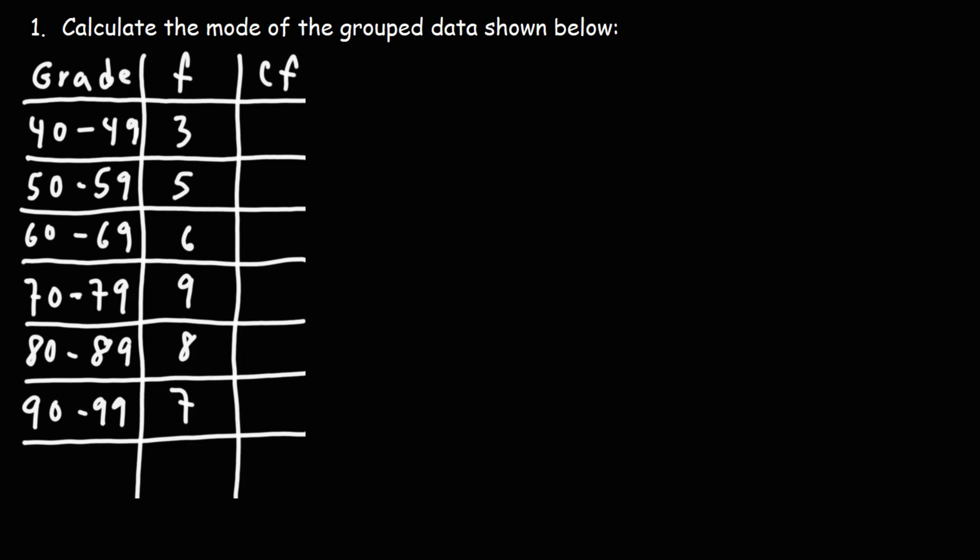In this lesson, we're going to focus on calculating the mode of the grouped data shown below. So in the first column, we have the grades of different students in the class. The second column has the frequency or the number of students that had those scores. The third column is the cumulative frequency.